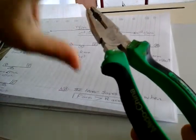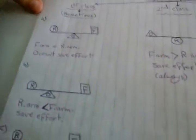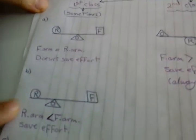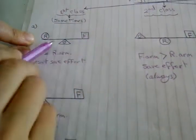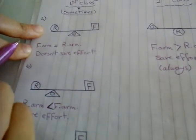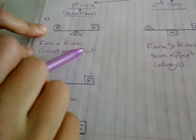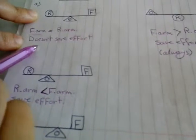What type of lever is this? The fulcrum is between resistance and effort force — it's a first class lever. In the first class lever, we have three cases: A, B, and C. In case A, the fulcrum is between effort and resistance with equal distances, so effort force arm equals resistance arm — it doesn't save effort.